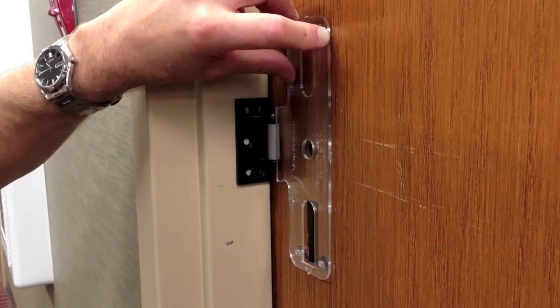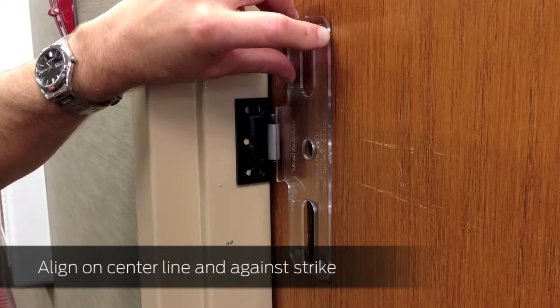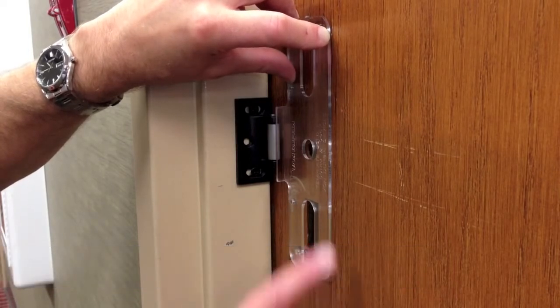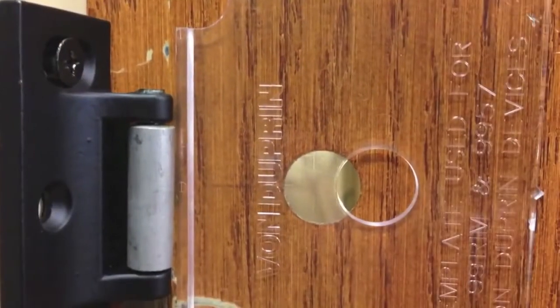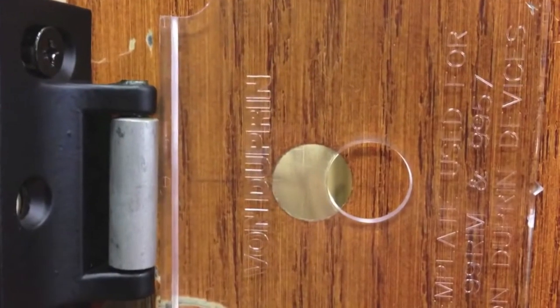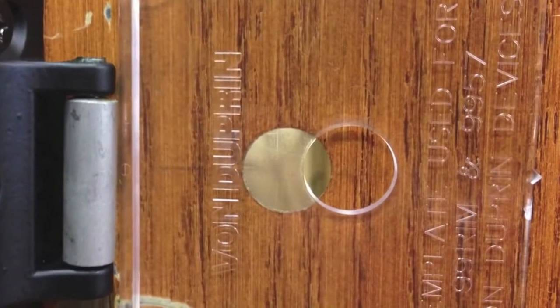Position the plastic template on the door as shown. Align the center hole of the template with the cylinder tailpiece cutout. The arrow on the hinge side of the template should be pointing to the center line. If the center hole of the template does not line up with the cylinder tailpiece cutout, contact the supplier of your door for support.